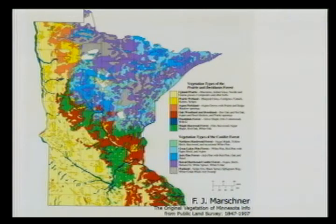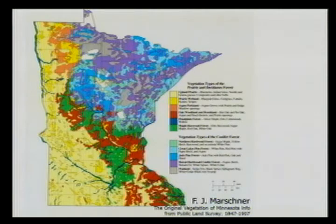I want to give some background information, starting with pre-settlement vegetation of Minnesota. A lot of the western and southern parts of the state was tallgrass prairie region. The green color shown on the map was the maple basswood forest, the reddish-brownish color was the oak savannah area, and up in the bluish and purplish areas is what we picture as the north woods — mixed pine forest and deciduous trees. These were plant communities, hundreds and thousands of different species of plants coexisting together because of different conditions.